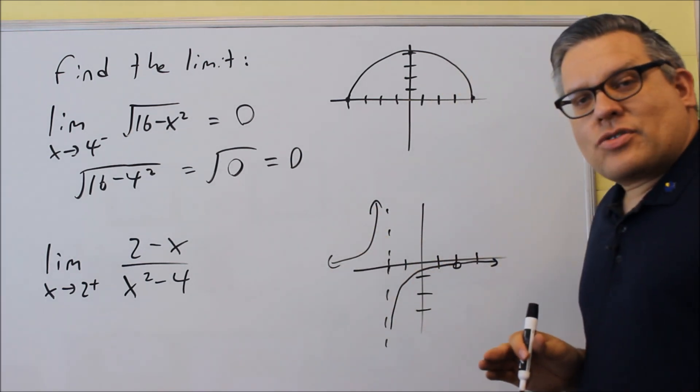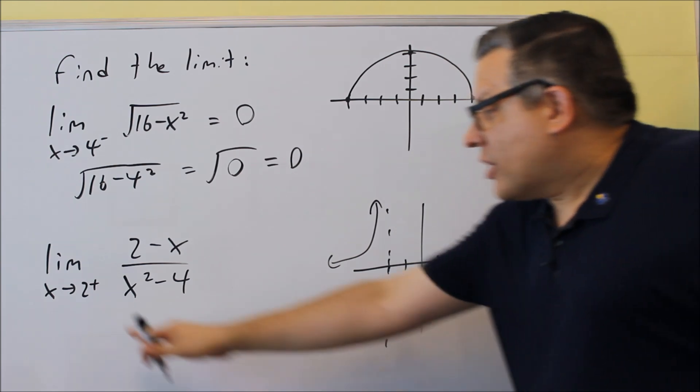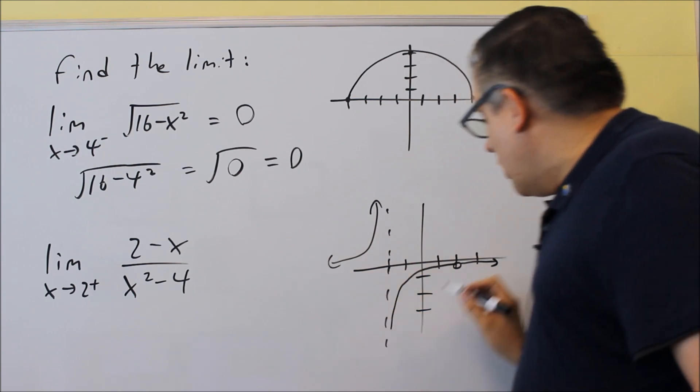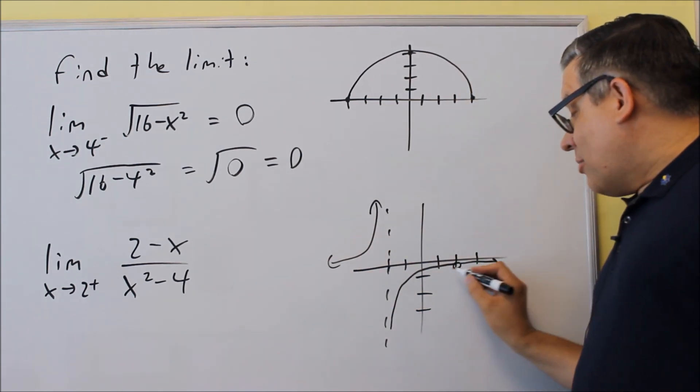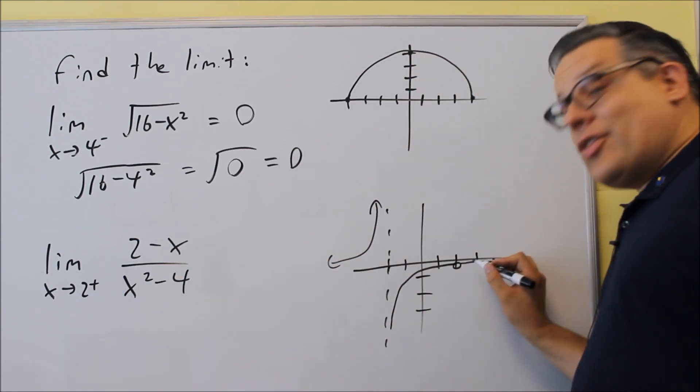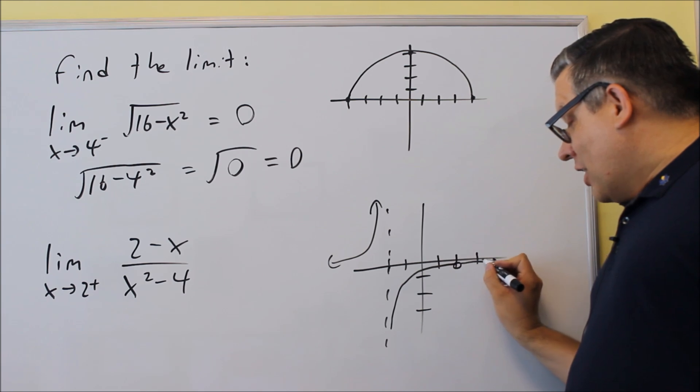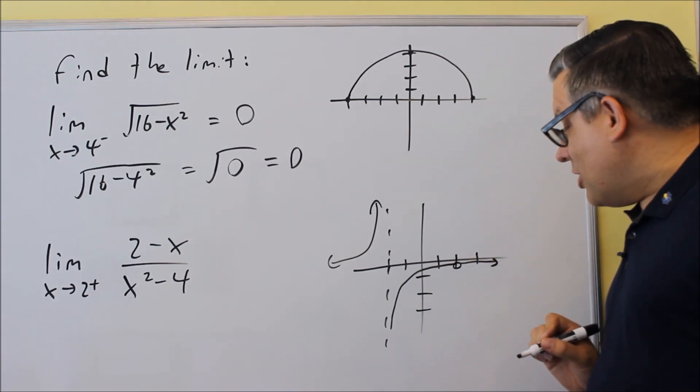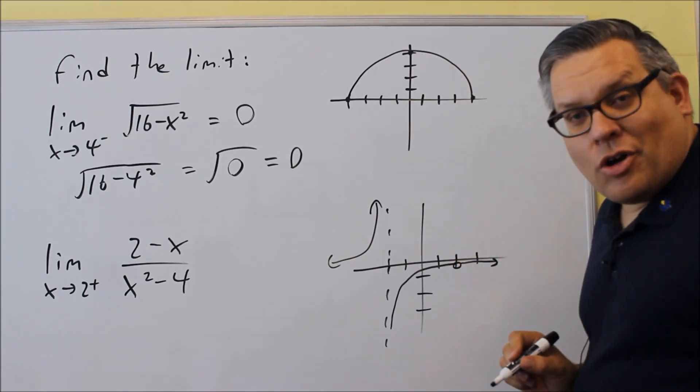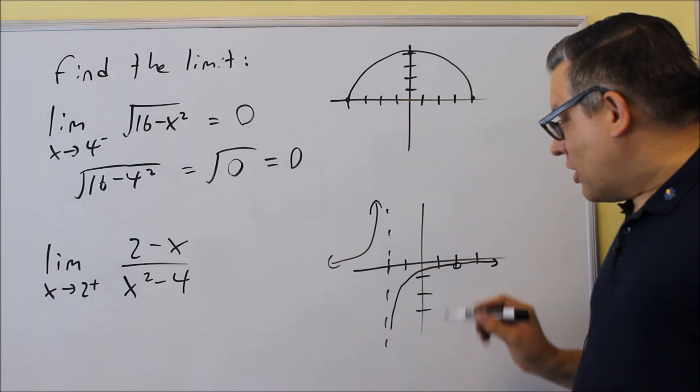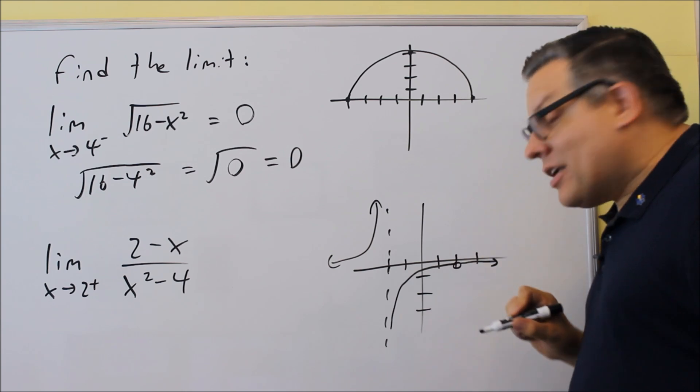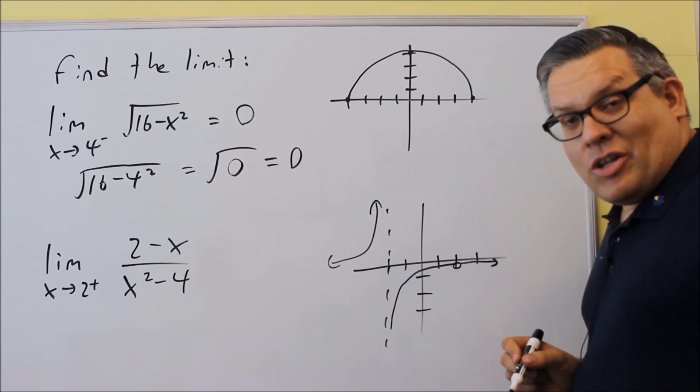Now unfortunately I can't do that same thing for the bottom one, because if I take 2 and plug it in there, I'm going to get division by 0. And so this one, if I take a look at the graph, I can tell that my answer, if I'm approaching 2 from the positive side, approaching 2 from the right, I get very close to this open circle. So all this is telling me is that it's going to be a fraction between negative 1 and 0 that's negative. I don't have enough detail to know exactly what that fraction is. I want to get the exact limit.